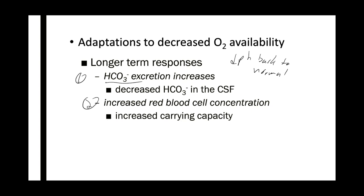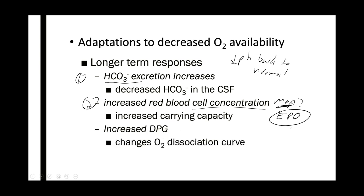The second long-term response is increased red blood cell concentration. The mechanism — hopefully you know this — is EPO. The kidney is signaled to increase EPO gene expression; EPO goes to the bone marrow and increases red blood cell production, which increases the oxygen-carrying capacity. Third, and probably one of the most high-yield things at high altitude, is increased 2,3-DPG. That causes a right shift of the hemoglobin dissociation curve, which helps unload oxygen from the hemoglobin into the tissues more efficiently.